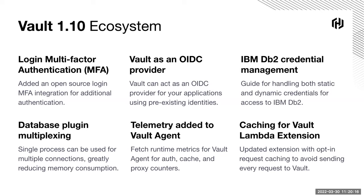We also added an improvement around database multiplexing. When Vault made a connection to a database, it was making one connection per process. So if you're managing 500 accounts, that's 500 processes, which consumes a lot of memory. The major improvement we made is bundling all that up within one process, which greatly saves on memory consumption, especially if you have a lot of database connections.